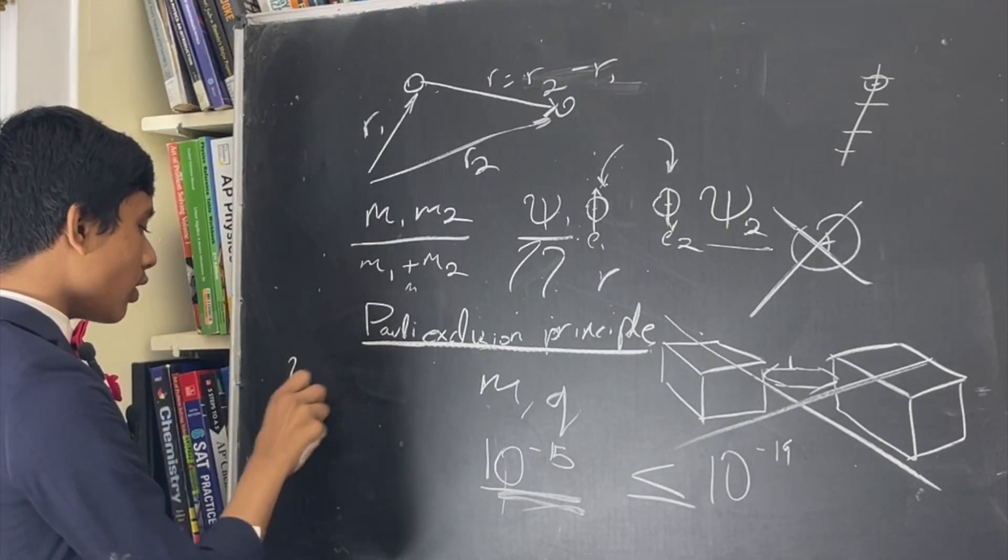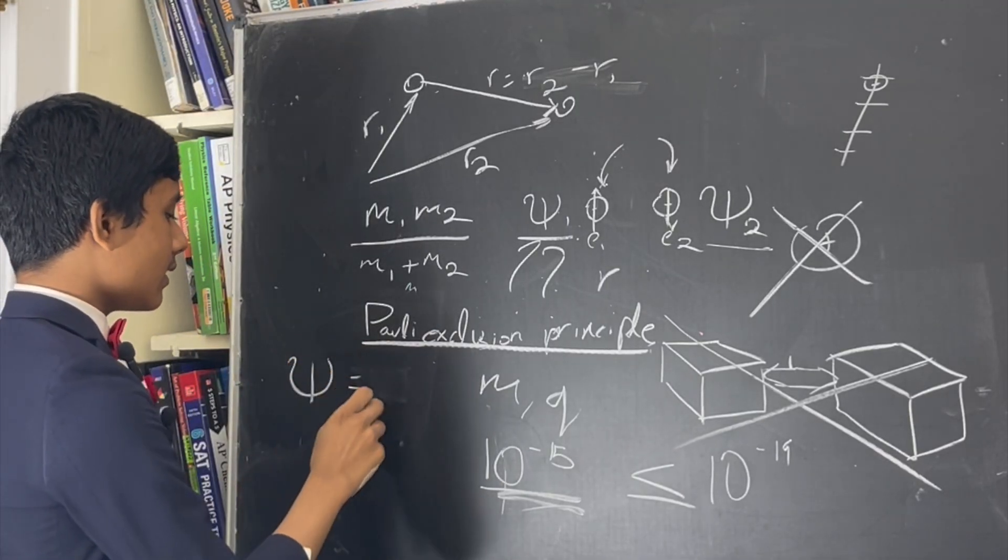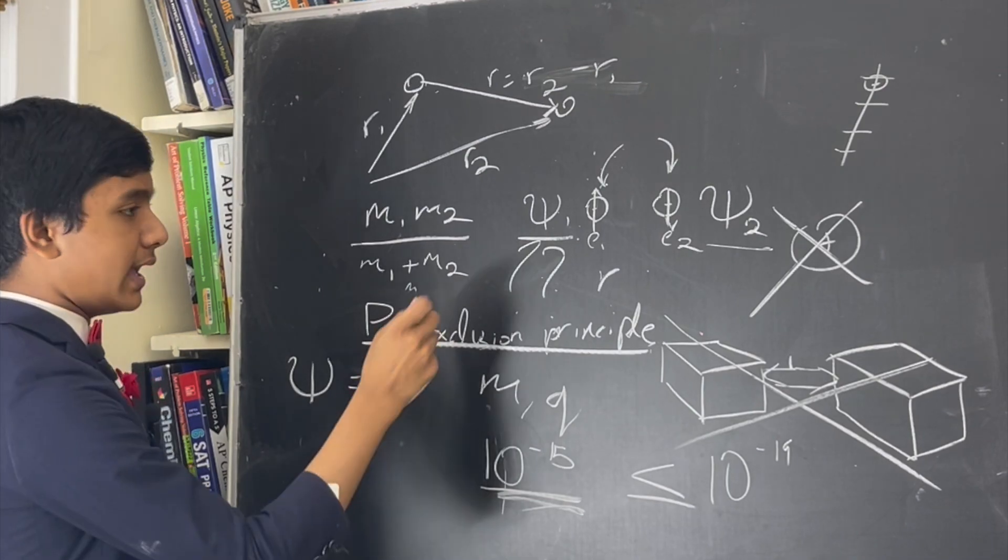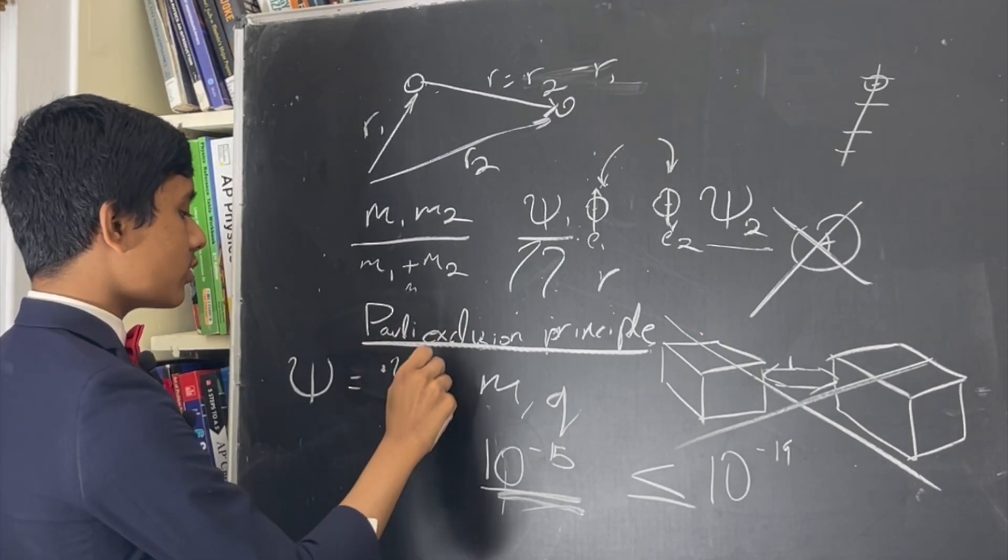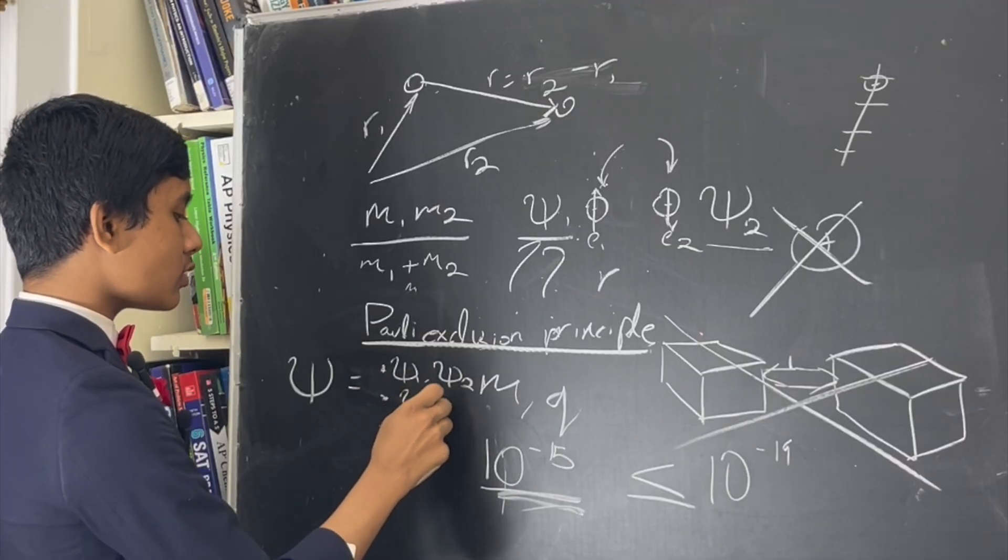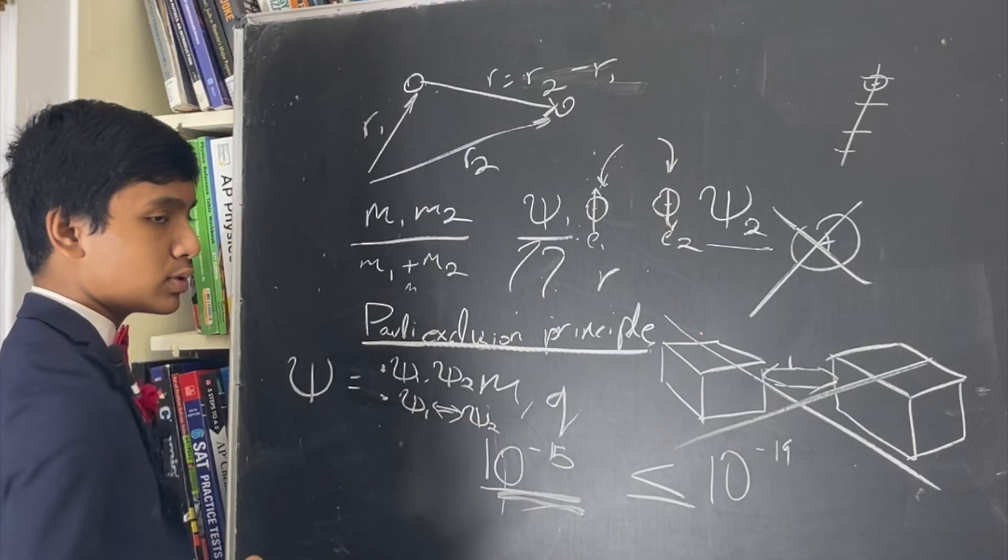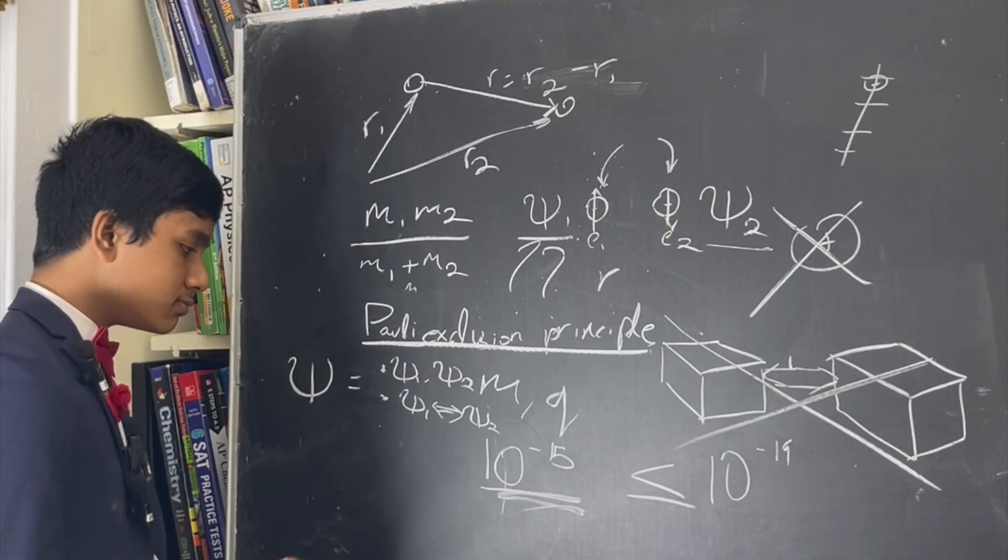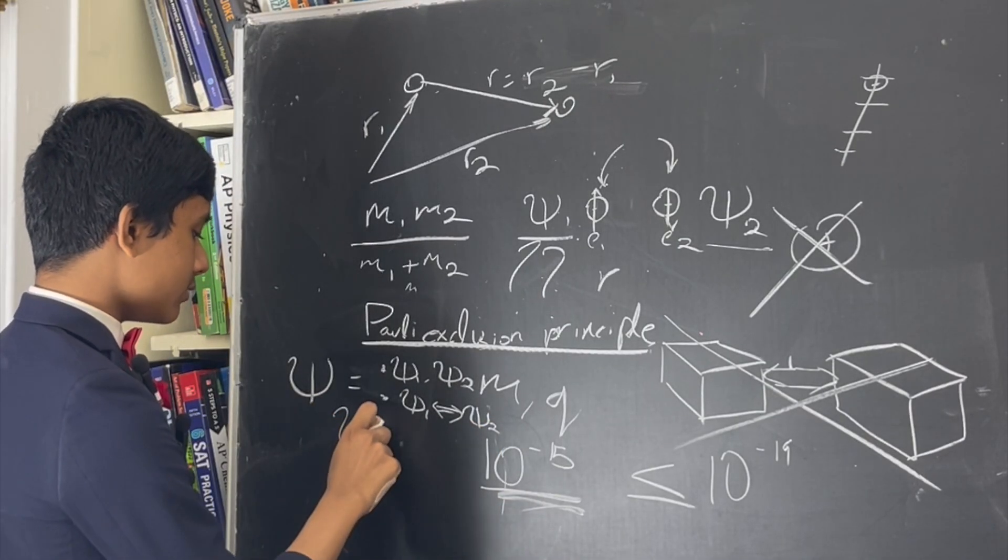We can only talk about the wave function of this system relatively. So, we're going to define a wave function that contains a note of both of the particle states and b is commutative. So, if particle one somehow switches with particle two, nothing will change. So, there is one way to do this.